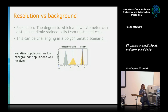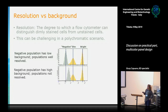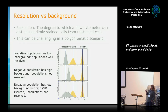Another key concept is resolution versus background. We define resolution as the degree to which a flow cytometer can distinguish dim-stained cells from unstained cells, which can be challenging in a polychromatic scenario. Some of you asked about the right voltage setting — the answer is that a high background with good resolution can still be acceptable, but we want to avoid a situation where resolution is lost. We want to avoid that problem in our panel design.